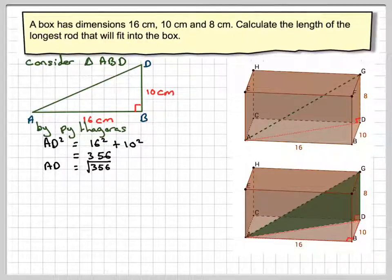I'm not going to bother working out my calculator. I'm just going to leave that, because I'm going to need to use that again. So mark it on here. This is the square root of 356.